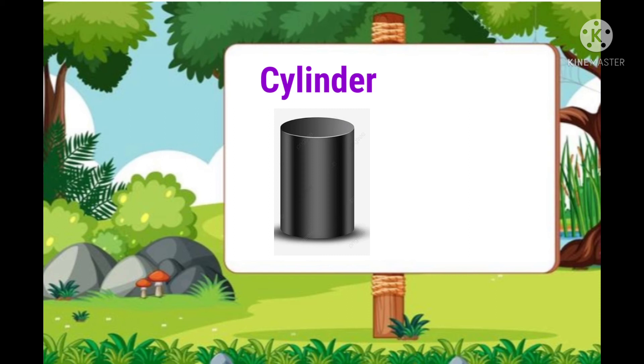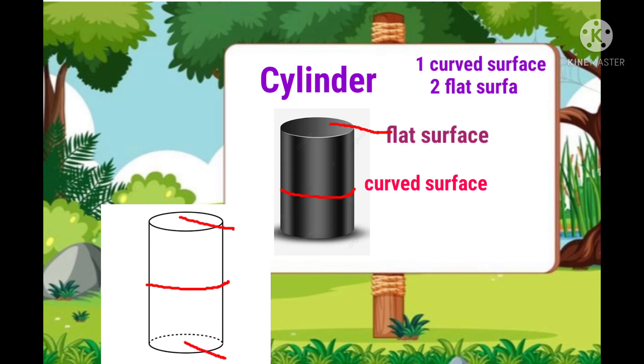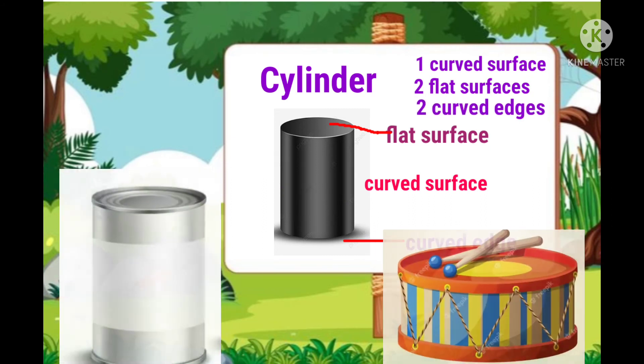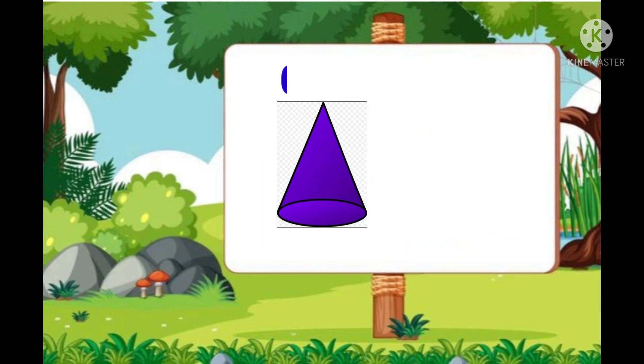A cylinder has 1 curved surface, 2 flat surfaces, 2 curved edges. Can and drum are the examples of cylinder.